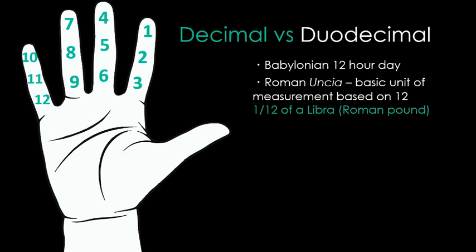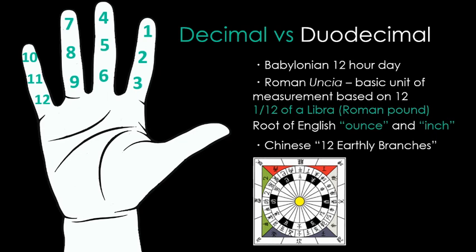By the way, you may have already known that the word libra is the reason that pound is abbreviated as lb, but what you may not have known is that uncia is where we get the English word ounce and also inch. But probably the best example of a base twelve system is the ancient Chinese, who use something called the twelve earthly branches for cardinal directions, a twelve-hour clock, a twelve-month calendar, and the twelve Chinese signs of the zodiac.